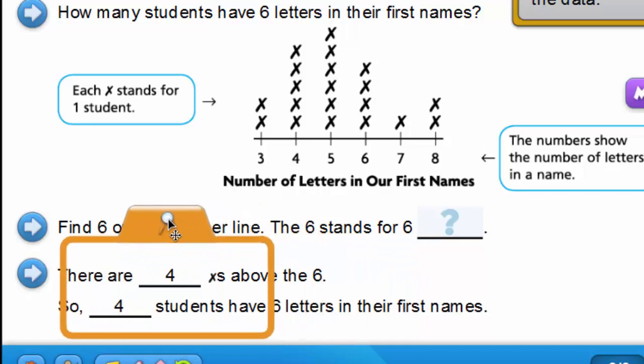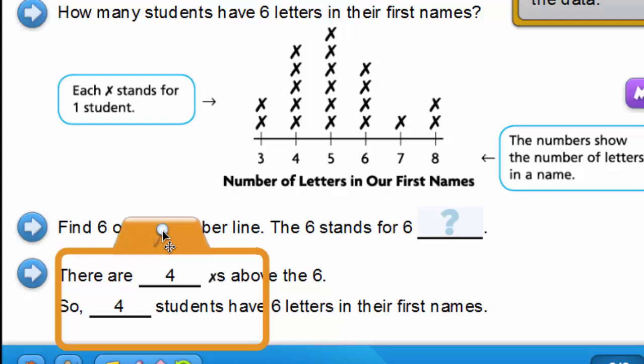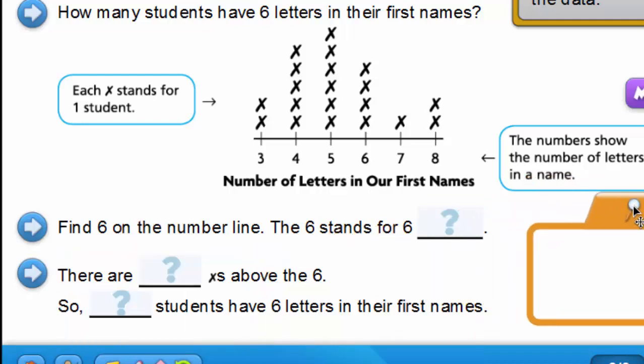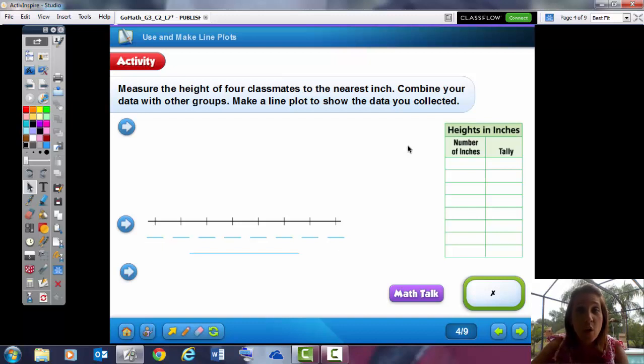There it is. The six stands for letters in their first name. There are four X's above the six, so that means there are four students who have six letters in their first name. I went ahead and did a pretend lesson for us.